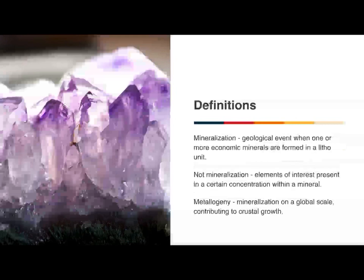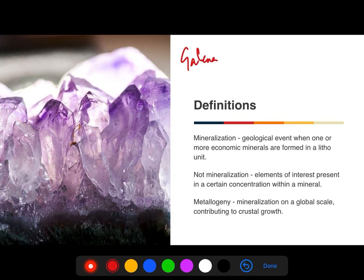We then have 'mineralization,' defined as a geological event when one or more economic minerals are formed in another unit. For instance, the occurrence of galena and sphalerite in carbonate accounts for lead and zinc mineralization. Similarly, the occurrence of bastnäsite in carbonatite accounts for rare earth element mineralization.